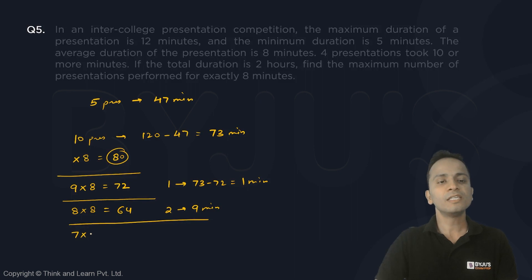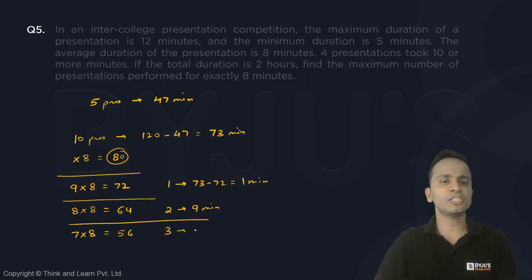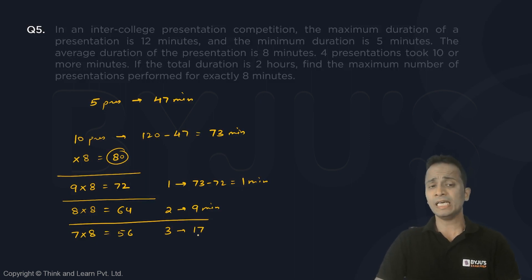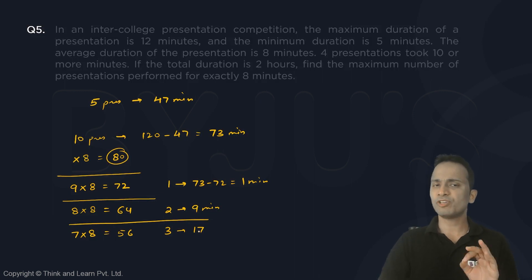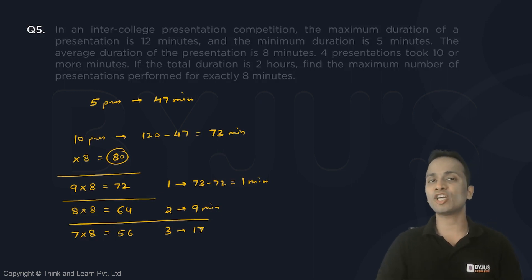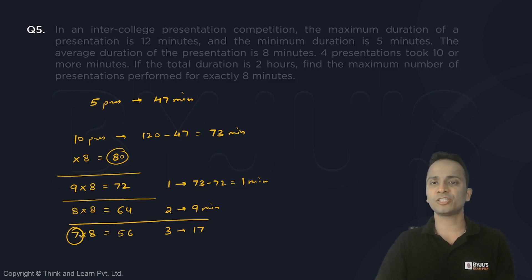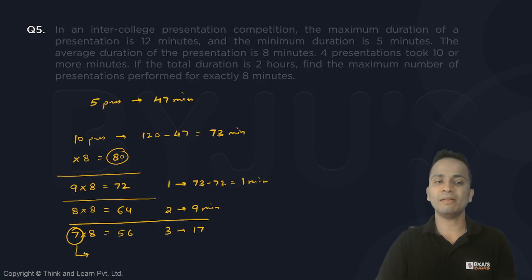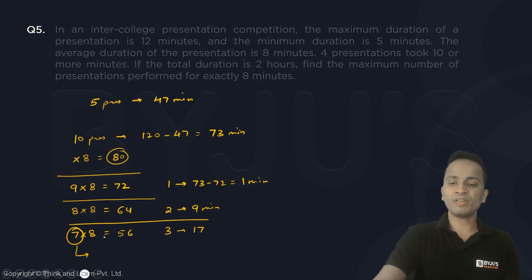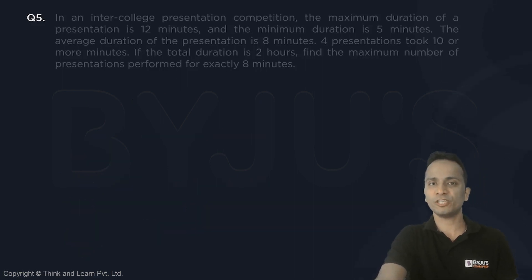Trying seven: 7 times 8 is 56 minutes. For the remaining three presentations, I'm left with 73 minus 56, which is 17 minutes. In these 17 minutes, three presentations can easily be accommodated with a minimum time duration of 5 minutes each. So the maximum number of presentations performed for exactly eight minutes is seven — seven is the correct answer.